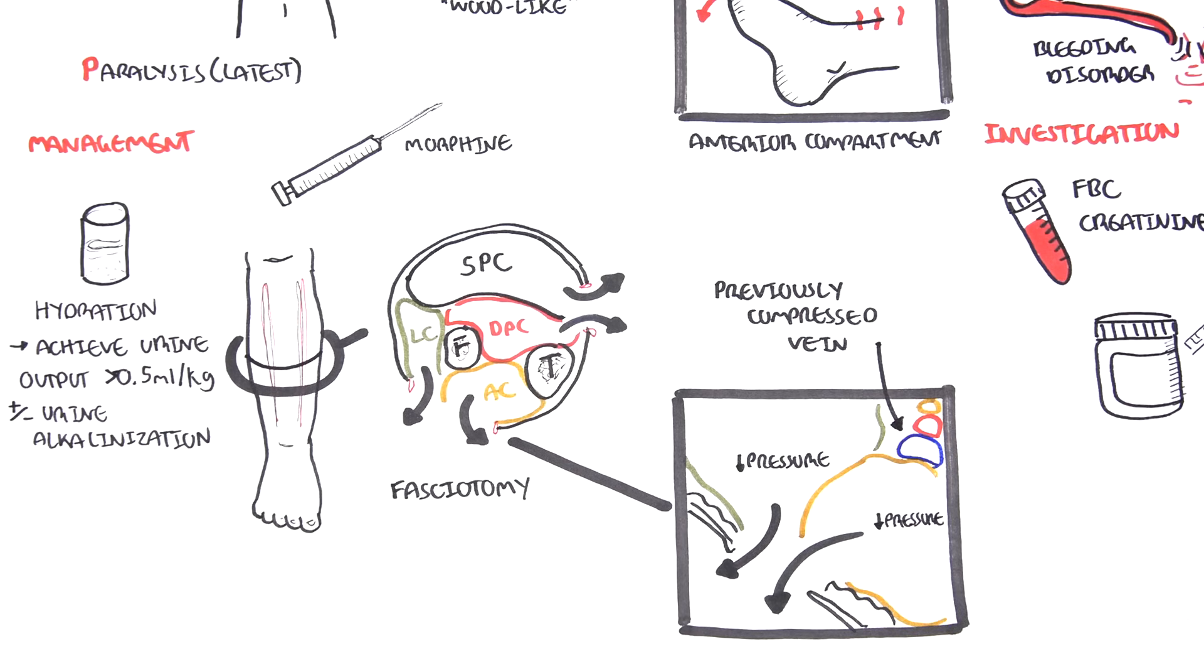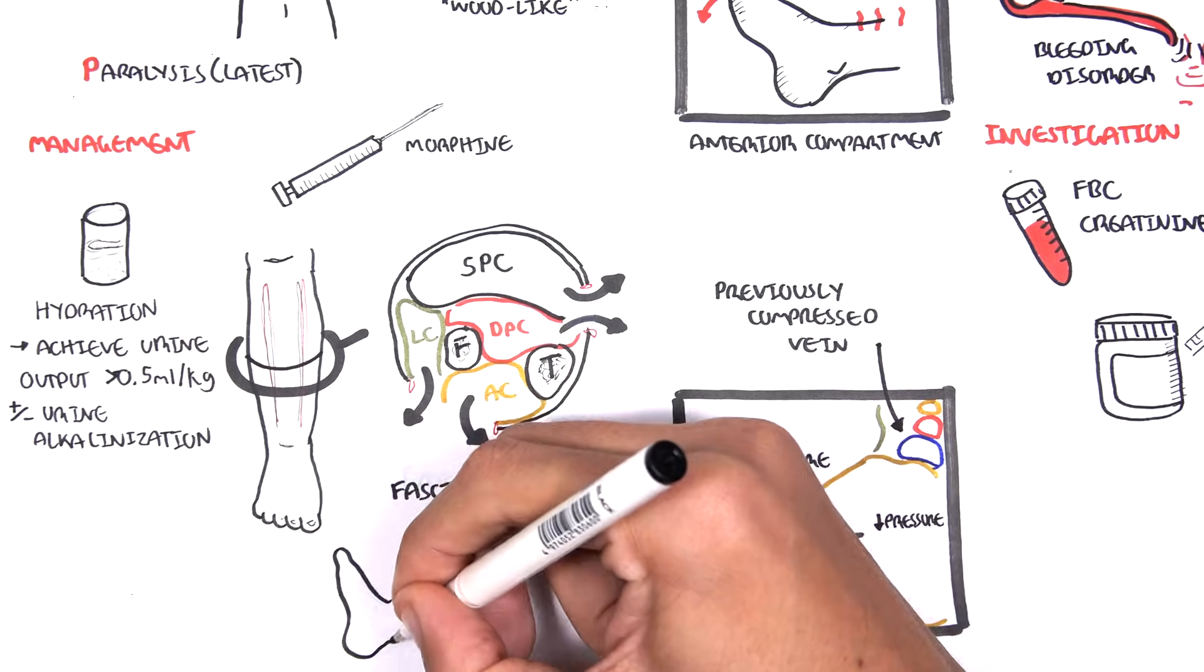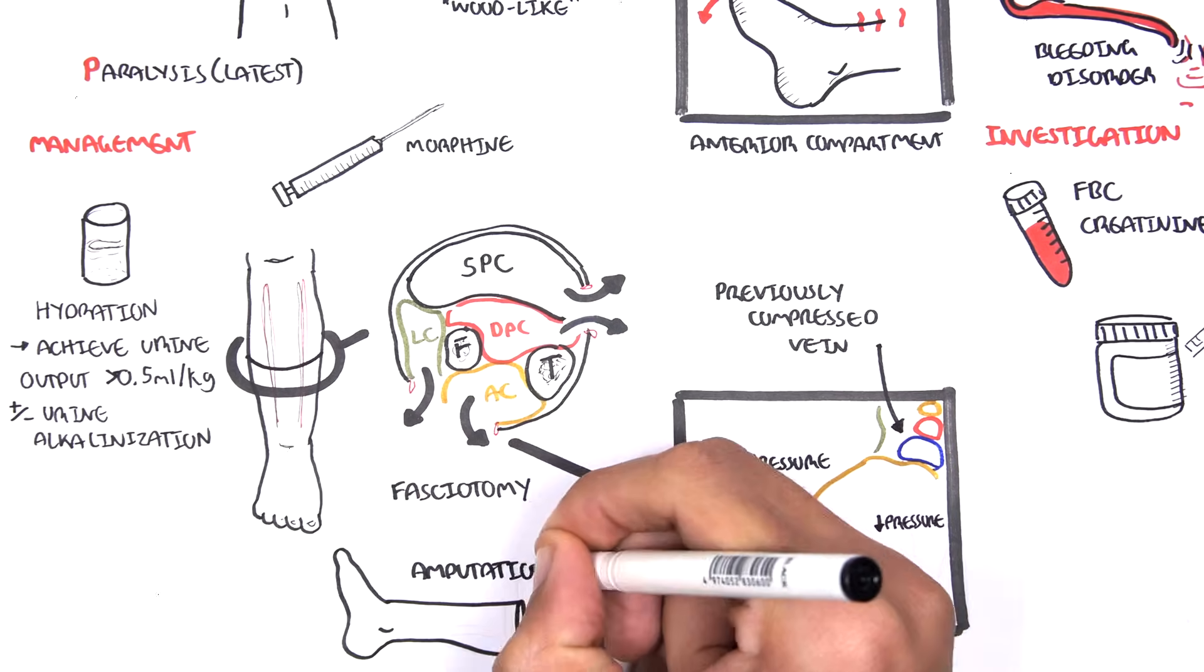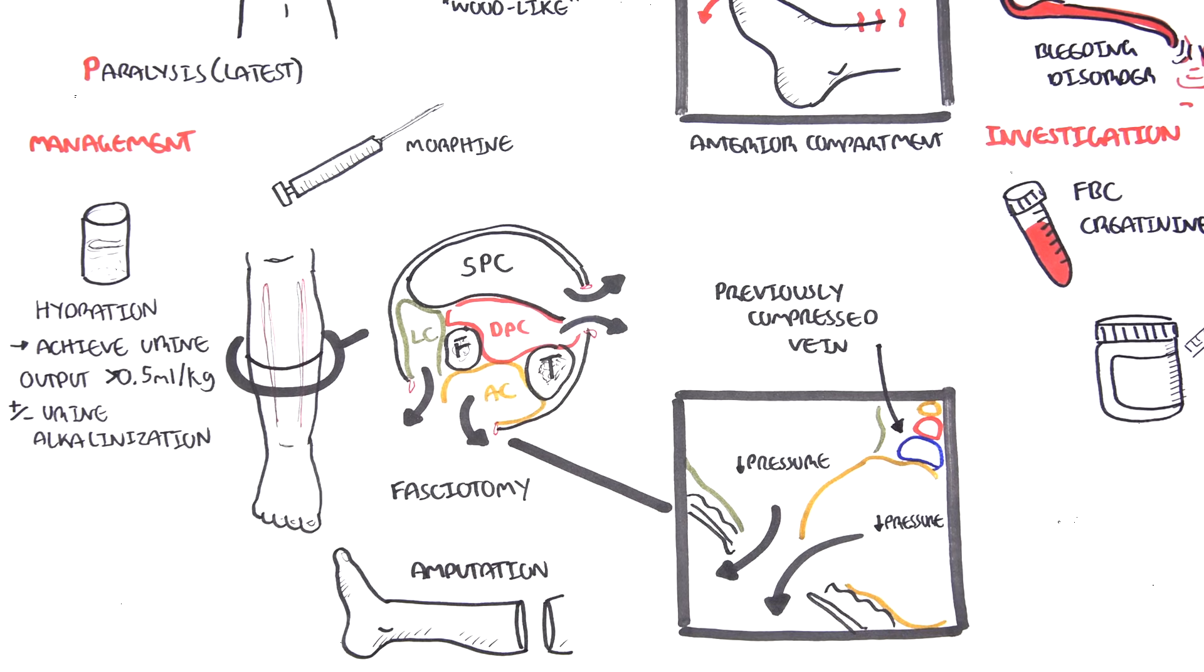Finally, if the surgeon thinks the limb is not viable because it was detected too late, for example, and there is gangrene, then limb amputation is performed.